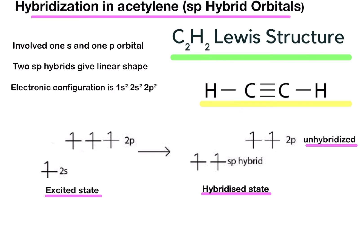Now, hybridization in acetylene. This time it is sp hybridization. The example is acetylene. The formula is C2H2, meaning two carbon and two hydrogen atoms. Between the carbon-carbon there is a triple bond, and between hydrogen and carbon there is a single covalent bond. This involves 1s and 1p orbitals. Two sp hybrids will give it a linear shape.